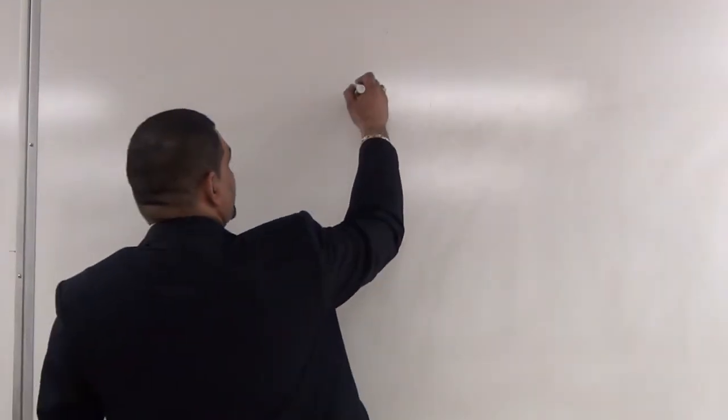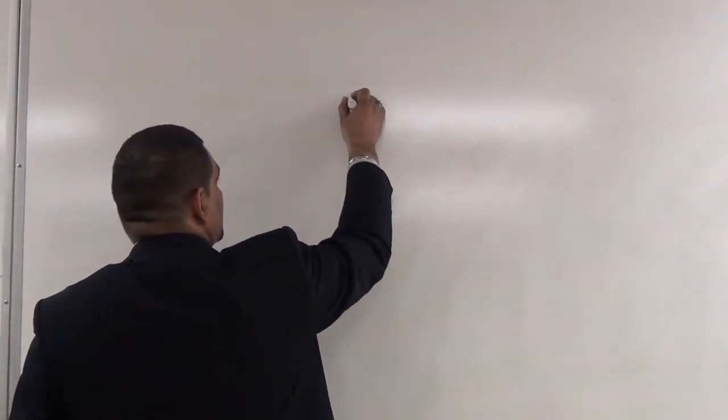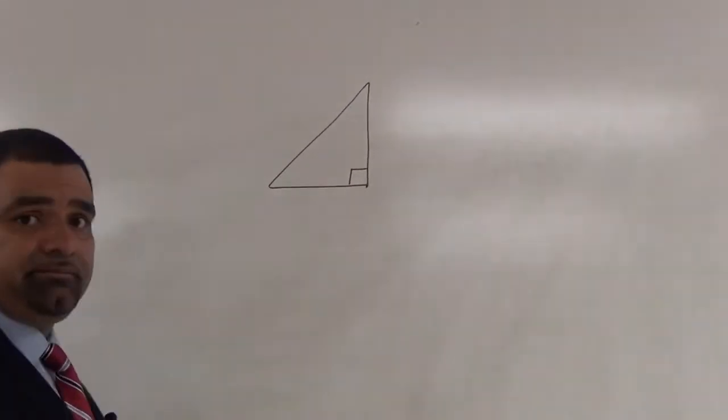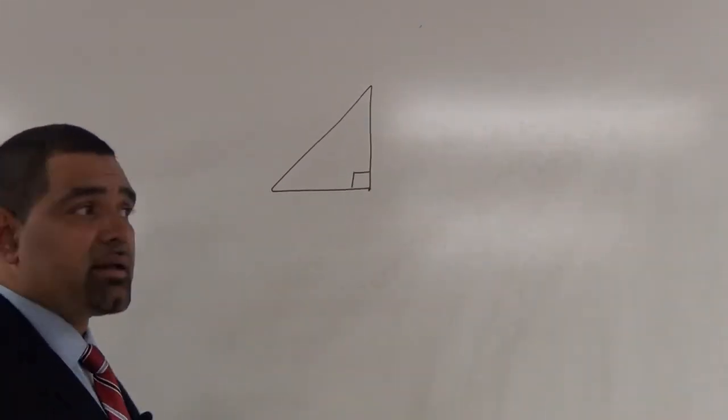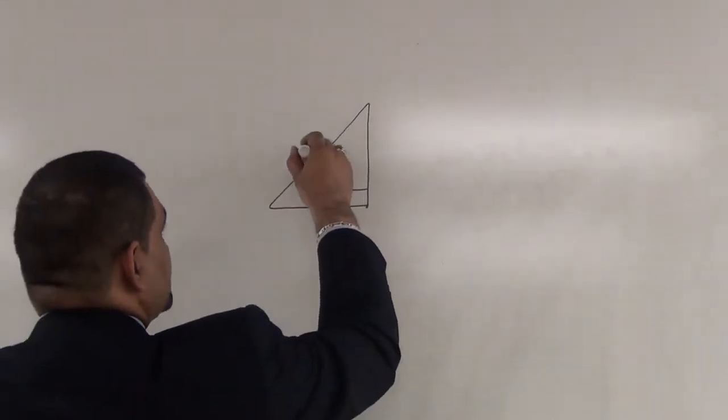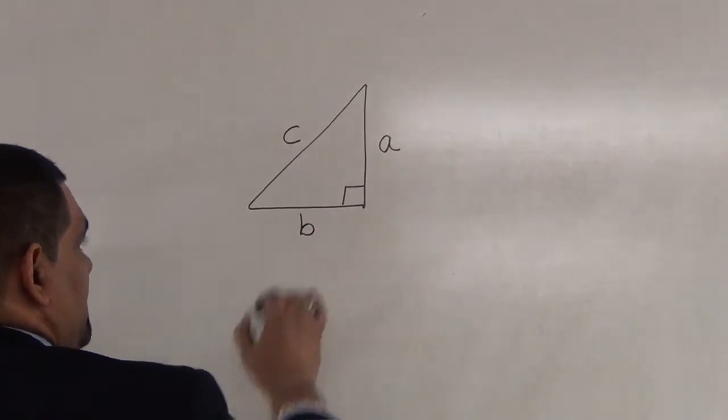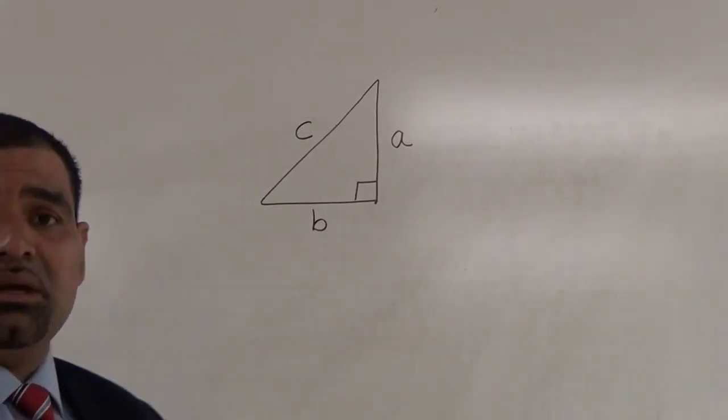Now, let's look at a right angle triangle. How do we identify a right angle triangle? By the right angle. Now, let's label the triangle. The longest side is C, the height of the triangle is A, and the base of the triangle is B.